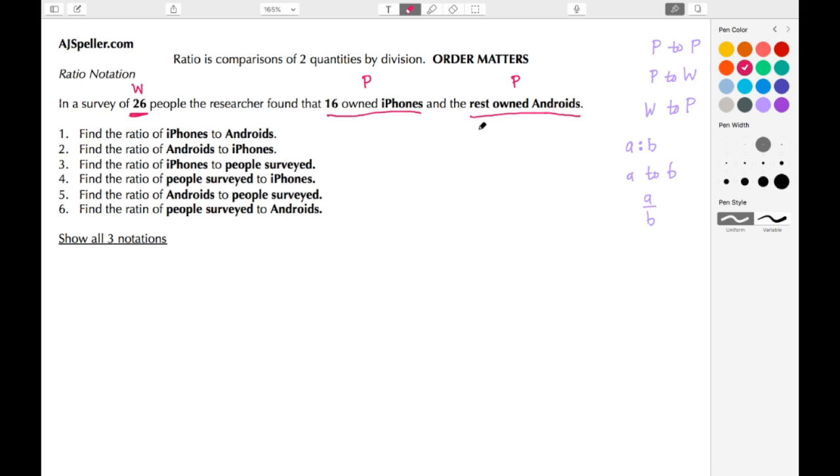Well, if we know that the whole is 26 and we subtract off the people who own iPhones, we know the remainder of the folks have to own Android. So 26 minus 16 gives us 10, so we know the Android users in this survey was 10 of them.